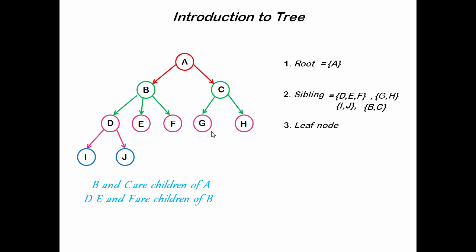Next one is leaf node or external node. The node which has no children is called leaf node or external node. Here, E, F, G, H, I, and J are leaf nodes because they have no children.